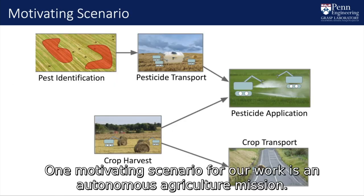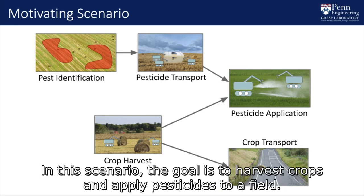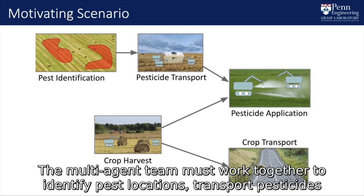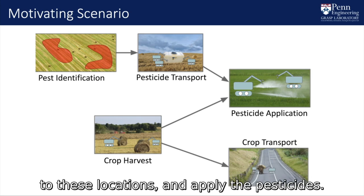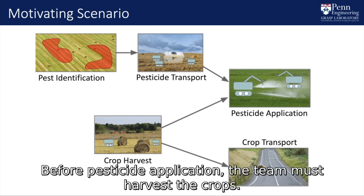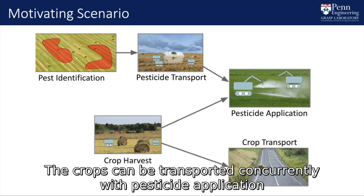One motivating scenario for our work is an autonomous agriculture mission. The goal is to harvest crops and apply pesticides to a field. The multi-agent team must work together to identify pest locations, transport pesticides to these locations, and apply the pesticides. Before pesticide application, the team must harvest the crops. The crops can then be transported concurrently with pesticide application.